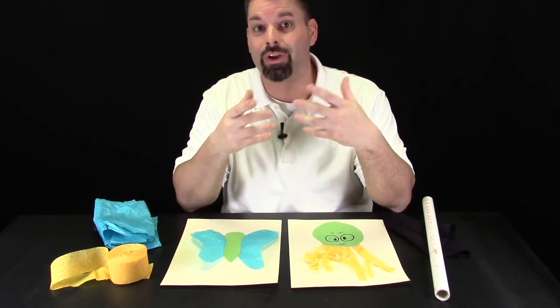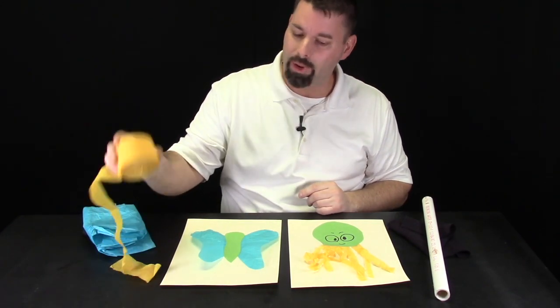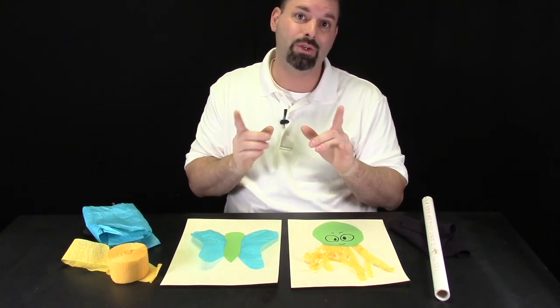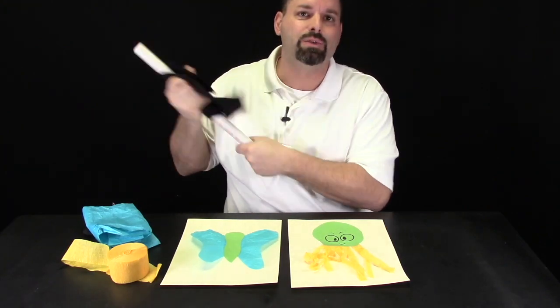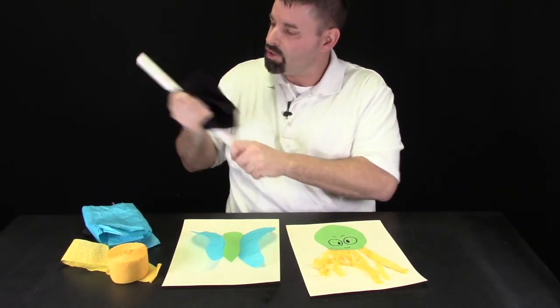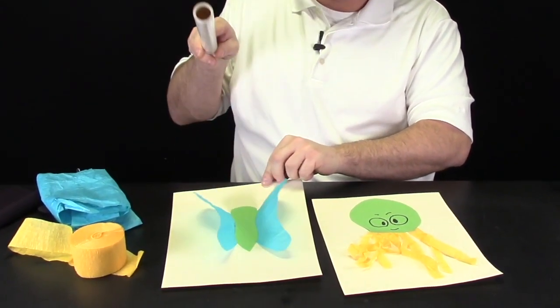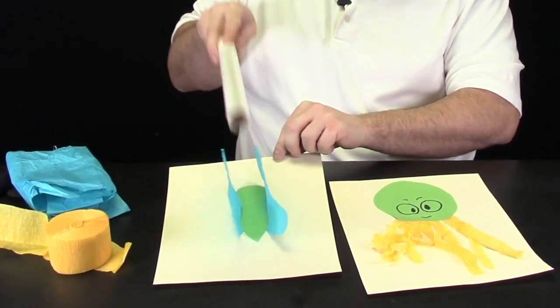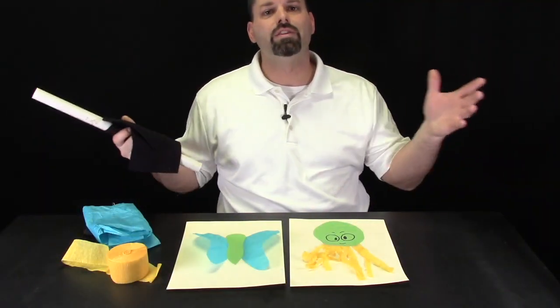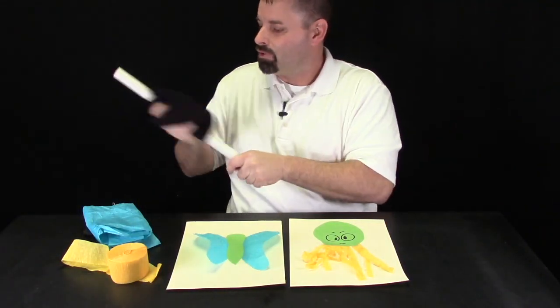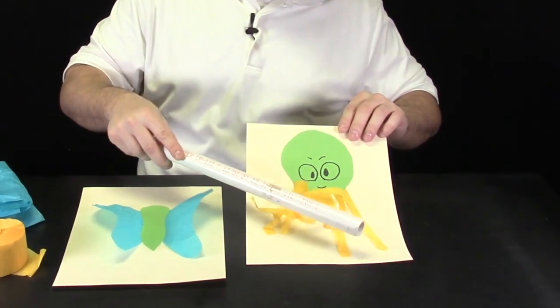We can also use static electricity to bring our artwork to life. Here I use tissue paper to make a butterfly and I use streamer paper to make an octopus. Now watch what happens when I charge my plastic pipe and bring it close to my artwork. We're going to try and make this butterfly fly. I charge it up and here we go. My butterfly is flapping away. All because of static electricity. Now let's see if we can make the octopus wiggle. Charge up the tube. There we go. He's reaching out with his tentacles.